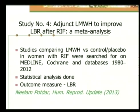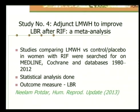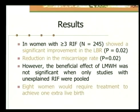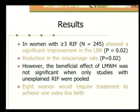The fourth study by Neelam Pordhar, published in Human Reproduction Update in 2013, was a meta-analysis on adjunct low molecular weight heparin to improve live birth rate after recurrent implantation failure. Studies comparing low molecular weight heparin versus control or placebo were collected from Medline, Cochrane, and conferences from 1980 to 2012. In women with more than 3 recurrent implantation failures — 245 women — there was a significant improvement in live birth rate and a reduction in miscarriage rate. However, the beneficial effect was not significant when only studies with unexplained recurrent implantation failure were pooled. A remarkable conclusion was that 8 women would need to be treated to achieve 1 extra live birth.